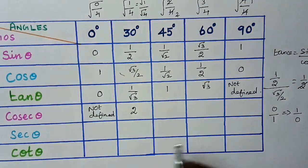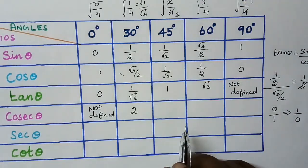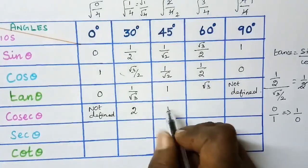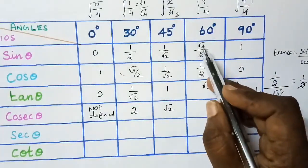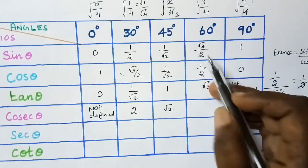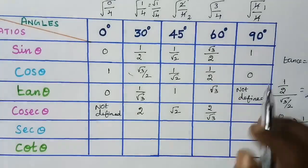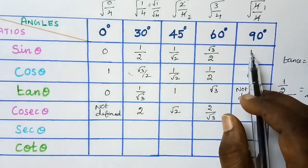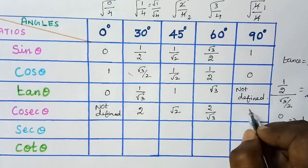In the same way we get all the remaining ratios of cosecant theta. Reciprocal of 1 by root 2 gives root 2. Next, reciprocal of root 3 by 2 is 2 by root 3. The last one is for 90 degree, which is 1, and the reciprocal of 1 is 1.